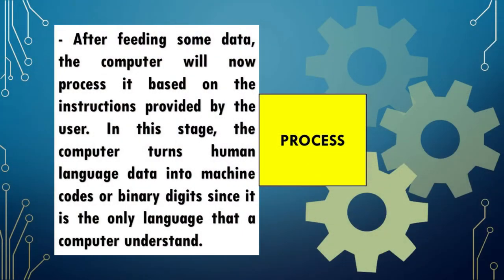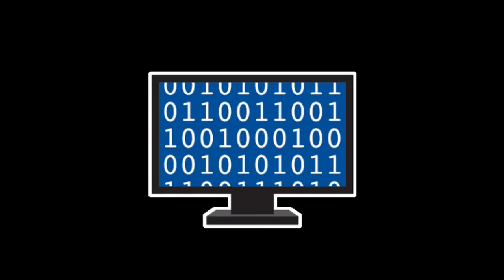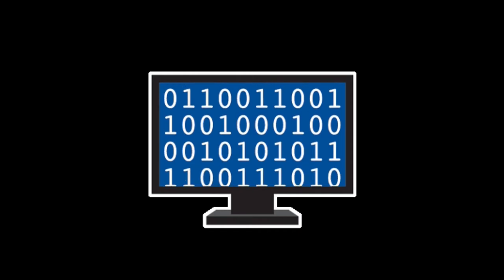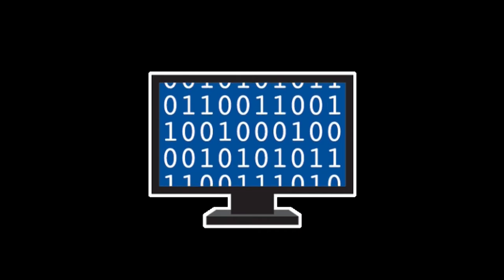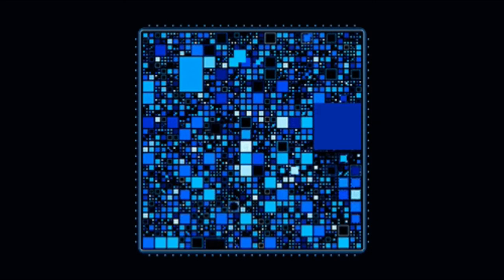Process. After feeding some data, the computer will now process it based on the instructions provided by the user. In this stage, the computer turns human language data into machine codes or binary digits, since it is the only language that a computer understands. This operation happens inside the computer, which is mainly controlled by the central processing unit or CPU. It processes data so fast that their speed is measured in MIPS.